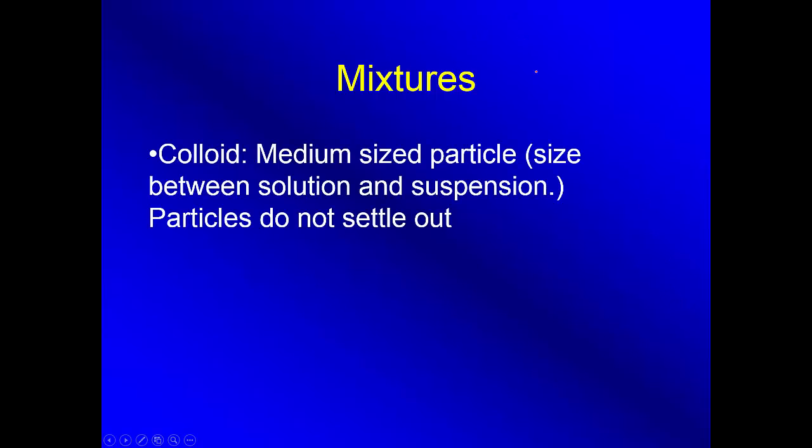So some other kinds of mixtures. Solutions have the smallest particles. Those particles, the solute particles, get so small you can't see them. Well what if the solute particles aren't that small? So what we have is a colloid. And a colloid is a medium-sized particle. That means that they're a little bit bigger than the solution. So what happens is they don't really get so small and get evenly distributed. They actually kind of hang out, they hover. They're not so big that they're going to settle to the bottom, but they are not so small. You can still kind of see them. Some examples of colloids. Let's see, I have a little video. Let's look at this.